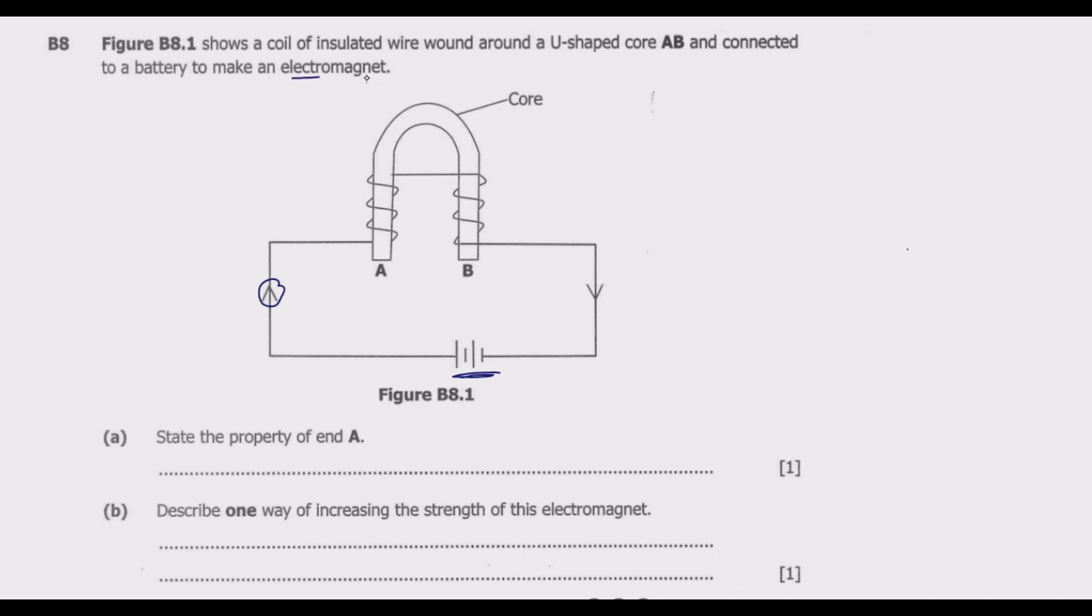Because this is an electromagnet, end A is either a north or south pole. To tell the property we need to know what A is. To find A we'll use what is known as the right-hand grip rule. That's what we are going to use.